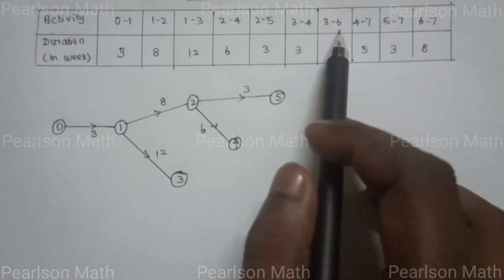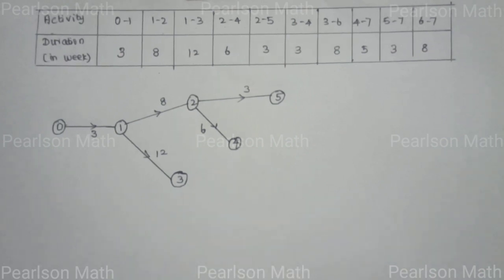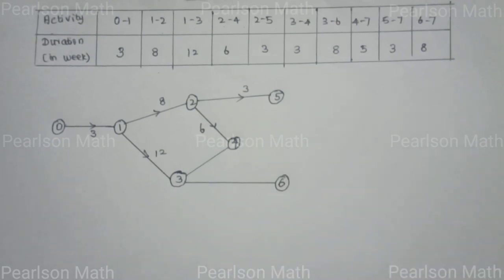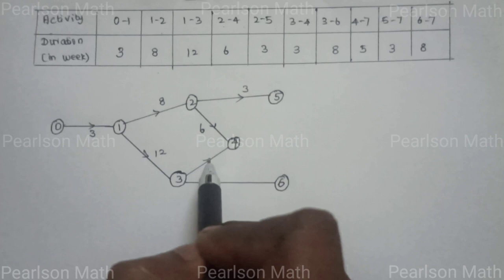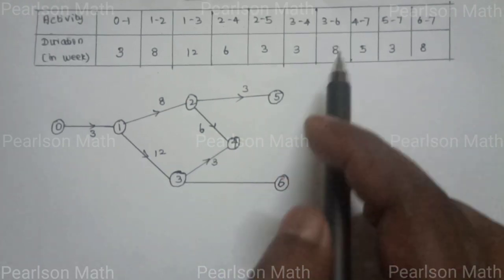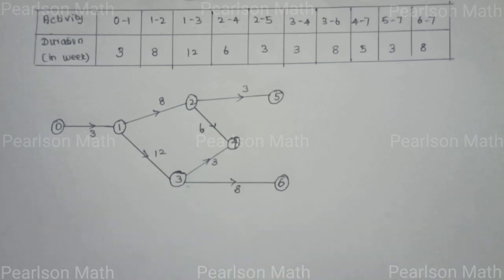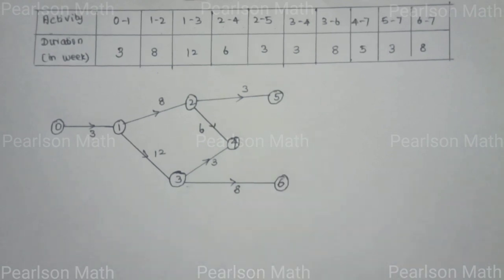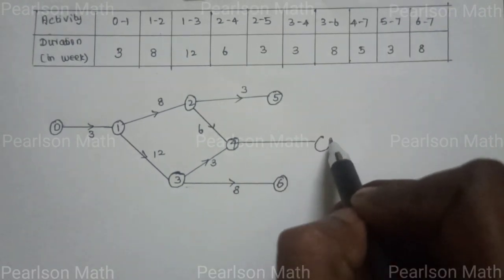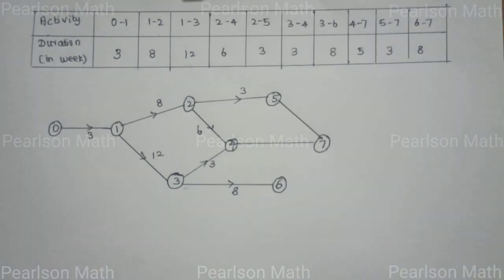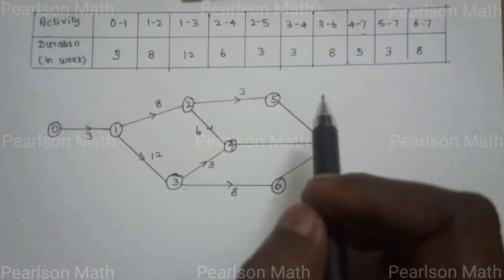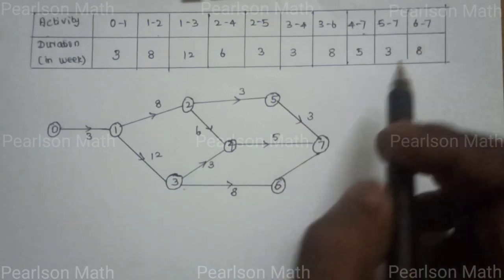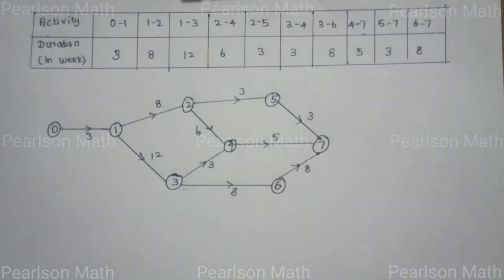From node 3 we have activities 3 to 4 and 3 to 6. Activity 3 to 4 has duration 3, and activity 3 to 6 has duration 8. From node 4 we have activity 4 to 7, from node 5 activity 5 to 7, and from node 6 activity 6 to 7, all converging at node 7.